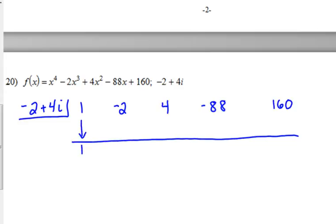Bring down the 1. We're going to multiply just like we always do. Technically, we're going to have to distribute this number to the imaginary number. But when you distribute 1, it doesn't change anything. So it's just going to be negative 2 plus 4i. Now when you add, you'll only add like terms. So negative 2 plus negative 2 is negative 4. You don't add anything to the 4i because we don't have anything to add to it.